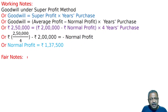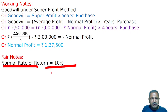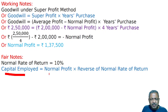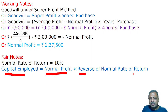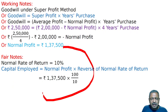And this is the key note. Normal profit is 10% and normal capital employed formula applies. Normal profit is 10%, which is the normal rate of return. Capital employed is equal to normal profit multiplied by the reciprocal of the rate of return. That is equal to Rs. 1,37,500 multiplied by 100 by 10.